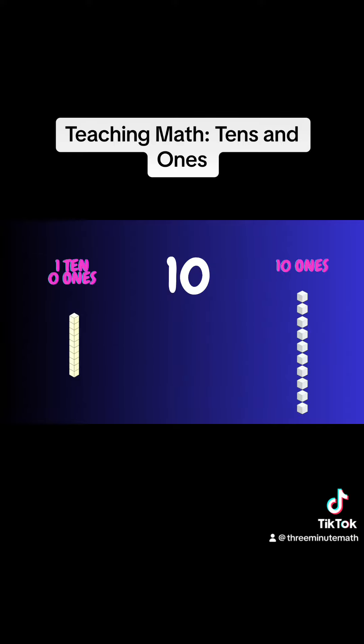One ten is one ten and zero ones or ten ones. Twenty is two tens and zero ones or twenty ones.